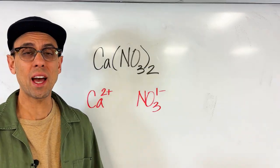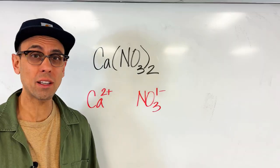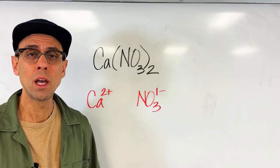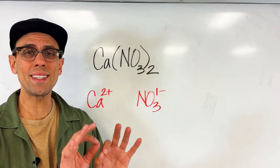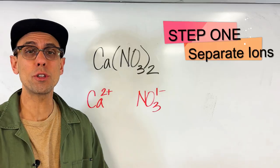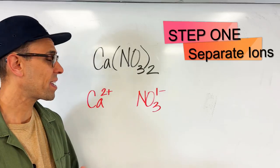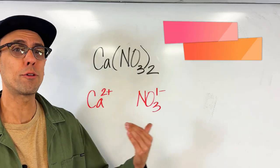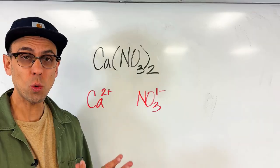Whenever we're looking at an ionic compound and trying to figure out the oxidation numbers of its elements, the first thing we always want to do is separate the compound into the respective ions. As you can see here I've separated the calcium from the nitrate. Now I also want to write their charges.